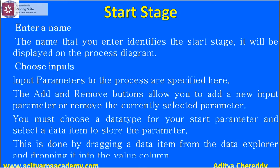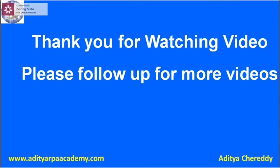We will enter a name, which means we will identify the start stage and it will be displayed in the process diagram. The input parameters to the process are specified here. The add and remove buttons allow you to add a new input parameter or remove the currently selected parameter. You must choose a data type for your start parameter and select a data item to store the parameter. This is done by dragging a data item from the data explorer and dropping it into the value column.